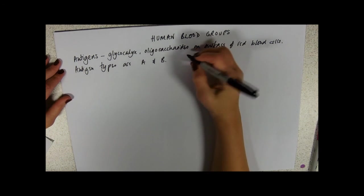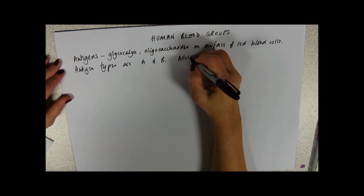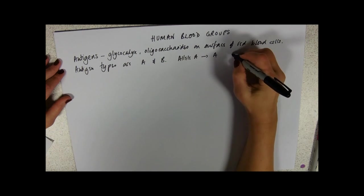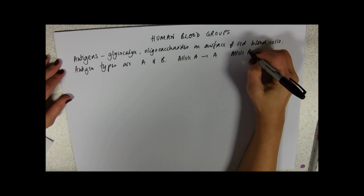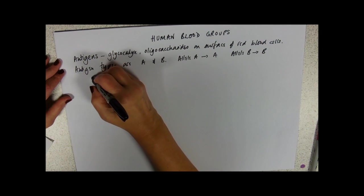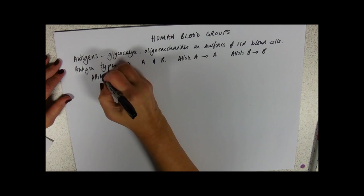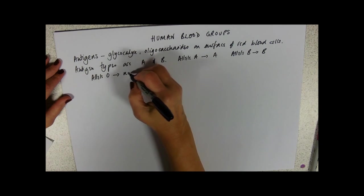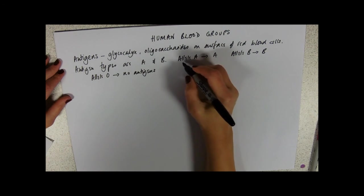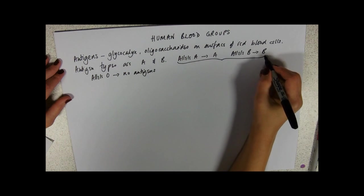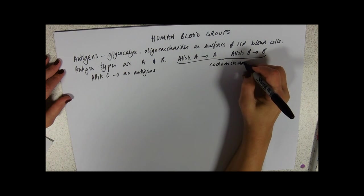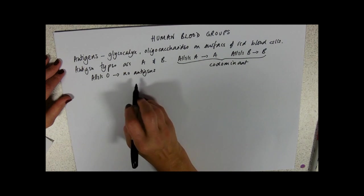They're genetically controlled. So there's allele A leads to antigen A, and allele B leads to antigen B. And then we have another allele which codes for no antigens. And the thing about these two here, allele A and allele B, is that they are co-dominant and both of them are dominant over the O allele.